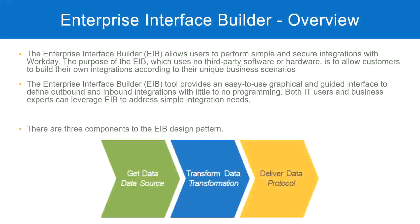When we create an integration using EIB, we will see these three steps: get data, transform data, and deliver data. These are the three components in an EIB design pattern. We configure where we get the data, whether transformation is needed, and how we deliver it to the external system. Once we configure these three steps, our EIB is ready and we can start exchanging information between Workday and an external system.